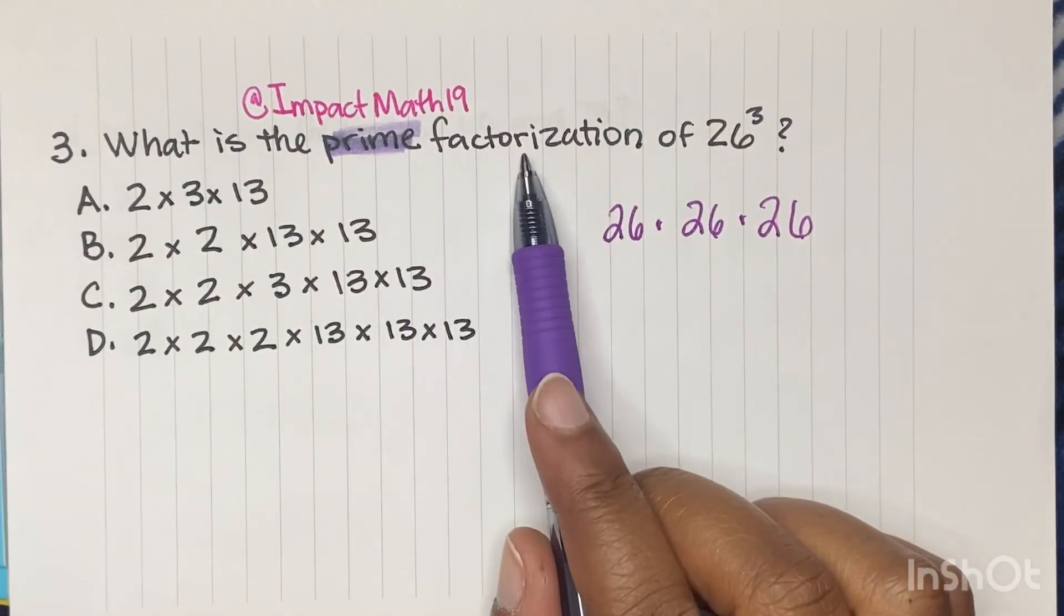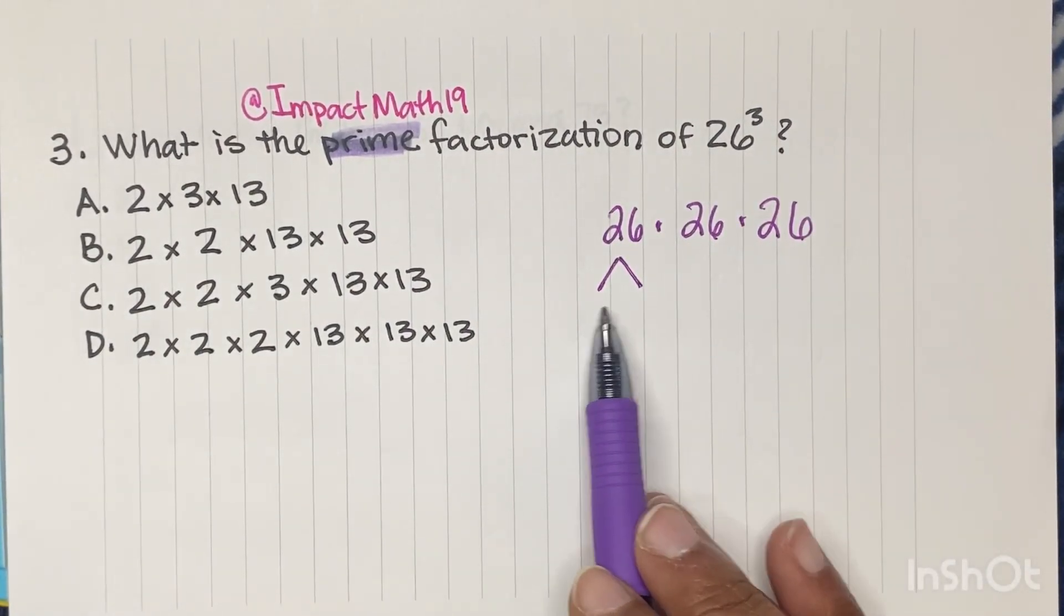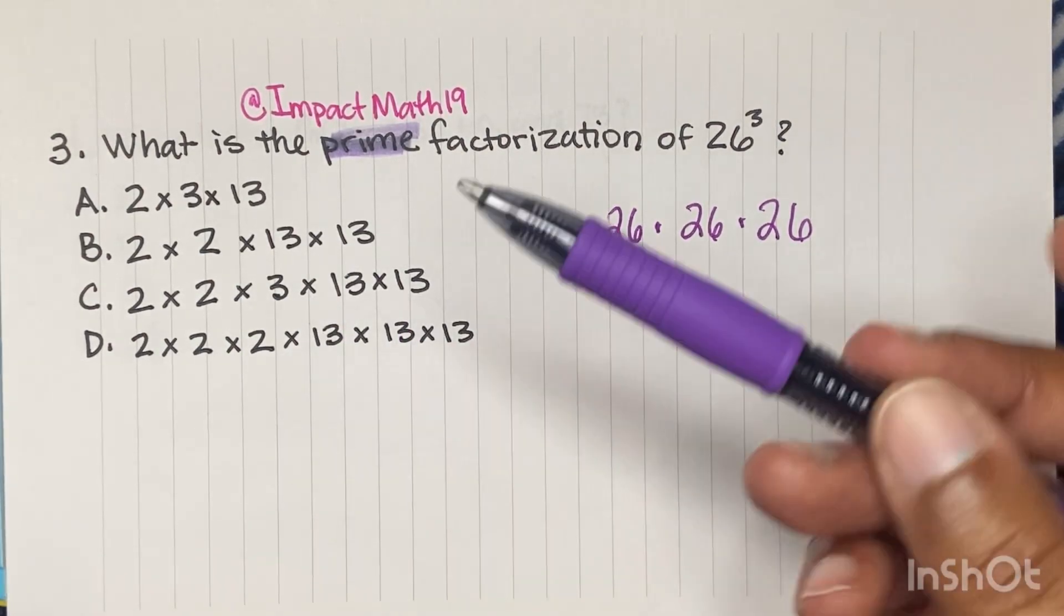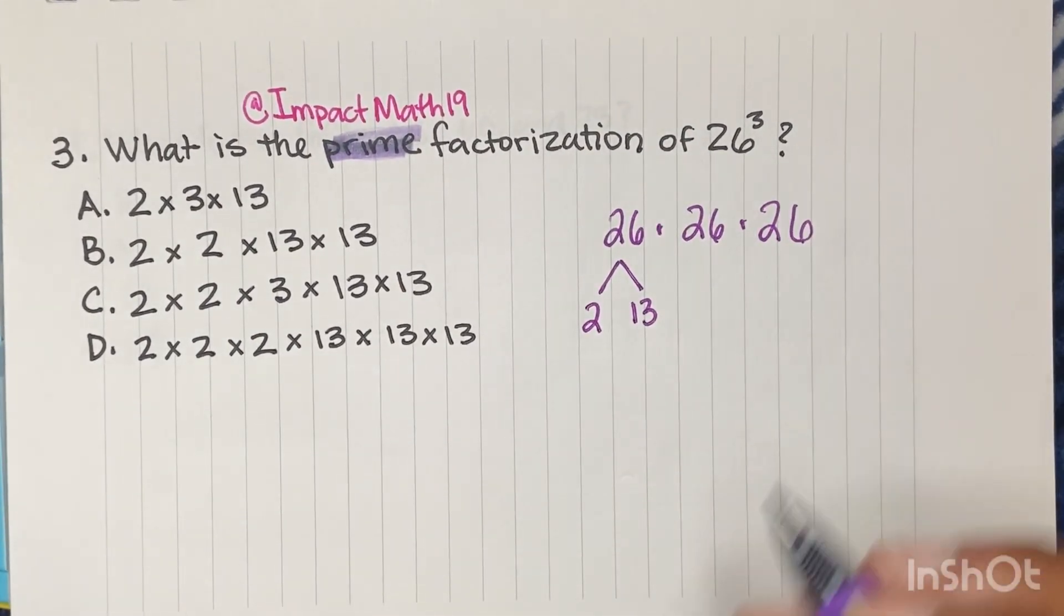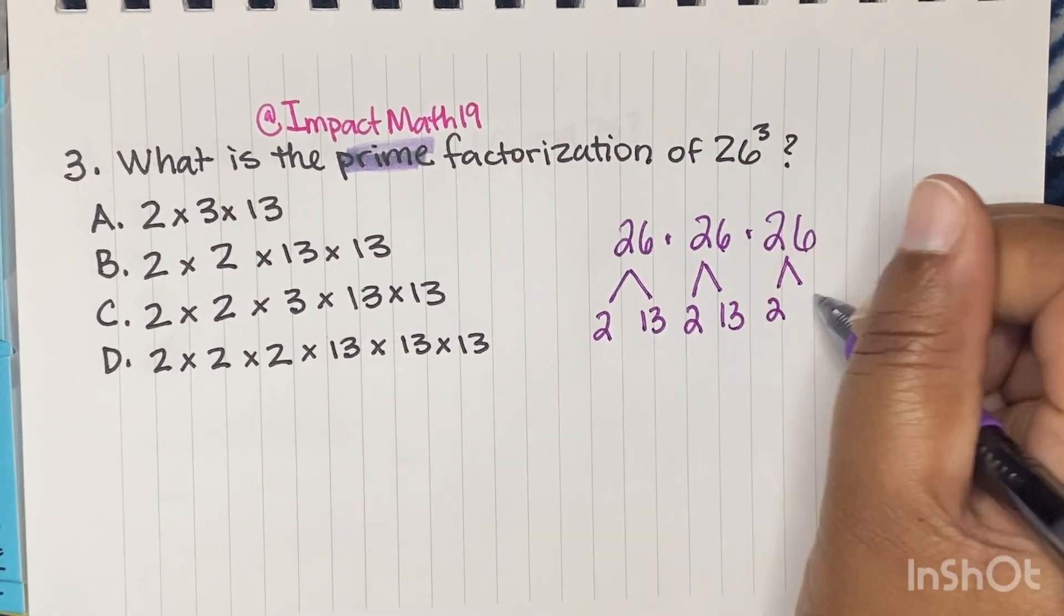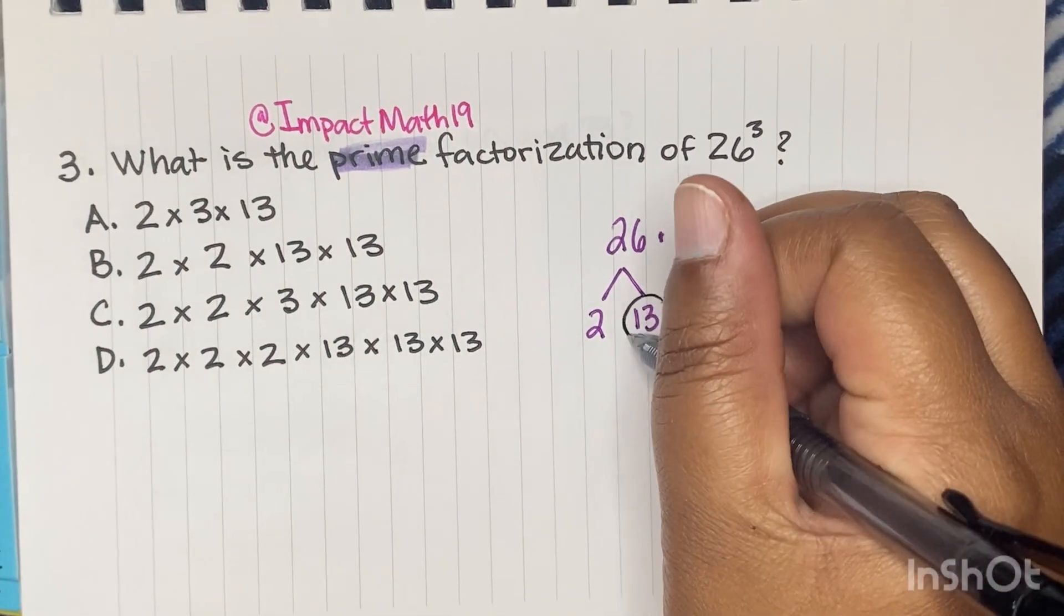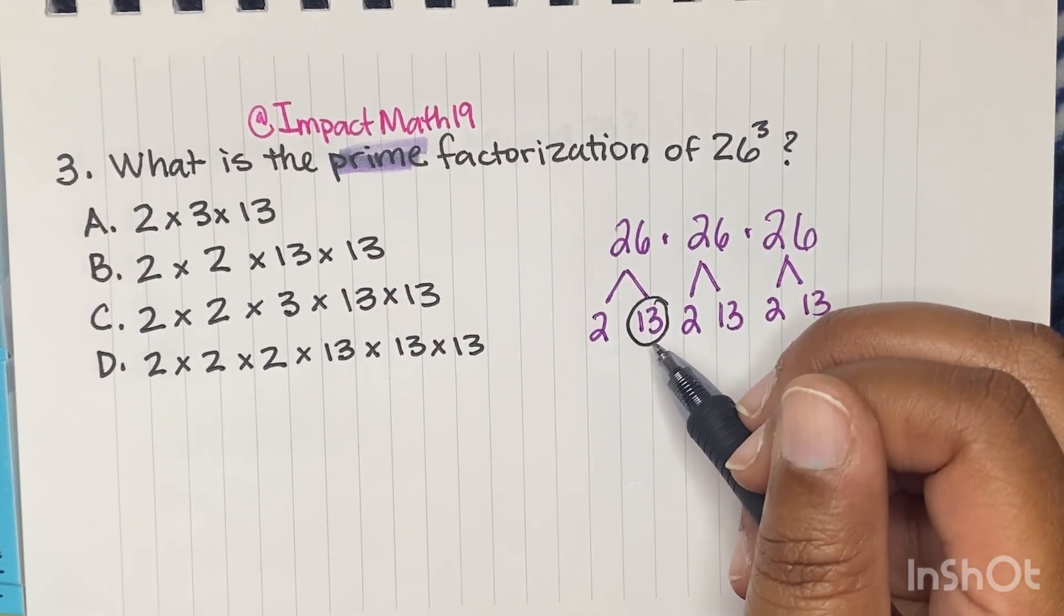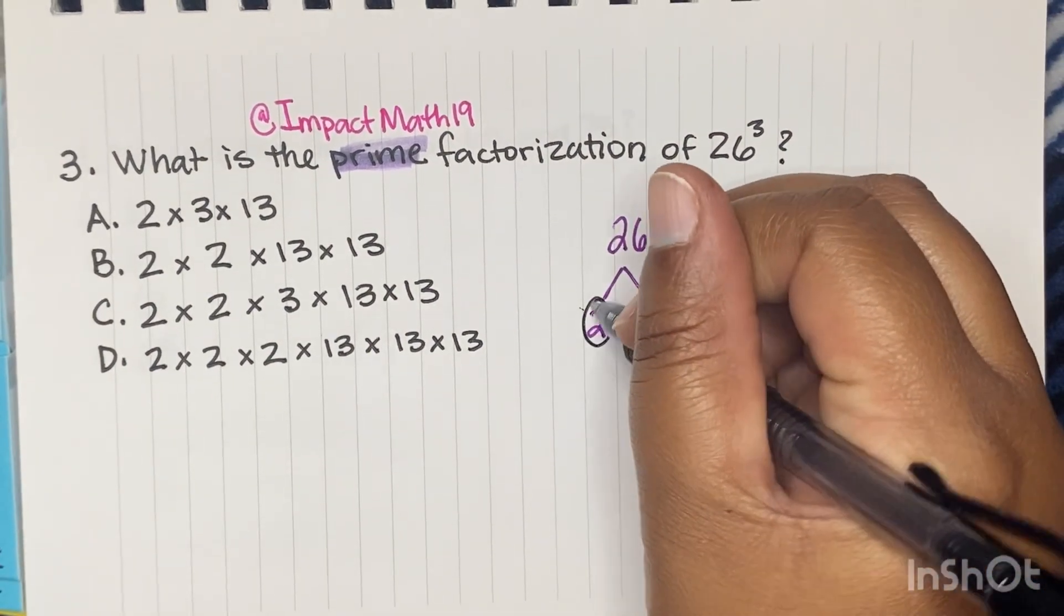But we're doing prime factorization. So we're going to draw our trees and I'm going to ask myself, what times what gives me 26? Well, I don't have to guess because my answers are right here. They're only using two and 13. So two times 13 gives me 26. Then I have this 26. Well, two times 13 and another two times 13. I know to stop here because 13 is a prime. And how I know that is because when I think of what times what gets me 13, only one times 13 can get you 13. So that's how you know when to stop.